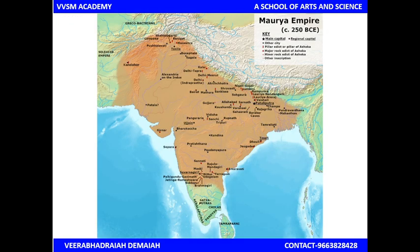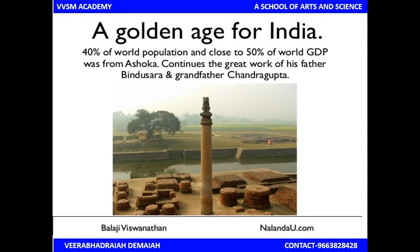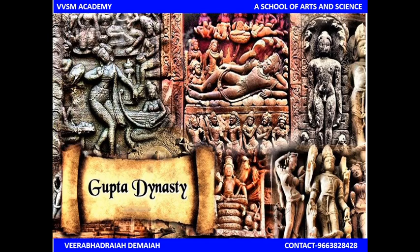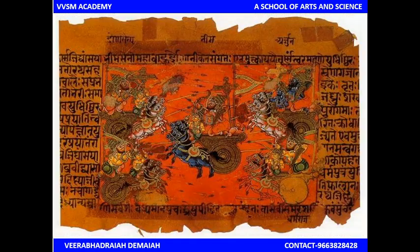Well friends — MAURYA EMPIRE — just a mock test for you. MAURYA EMPIRE. In the history of social studies, the golden age of the Guptas: 40% of world population and 50% of world GDP. Ashoka the Great continues the great work of his father Bindusara and grandfather Chandragupta. This is the Gupta dynasty — sculptures, scripts, and monuments found in India and in Indian history.